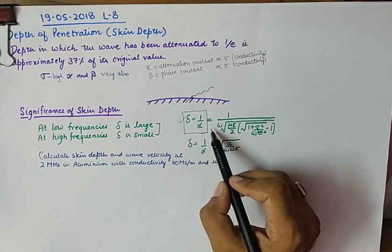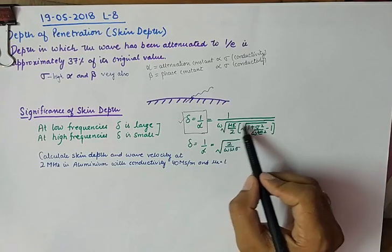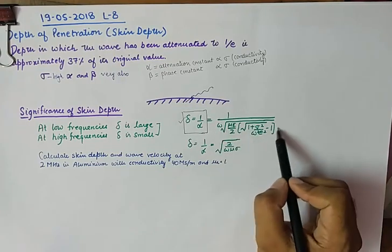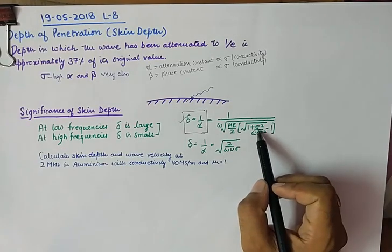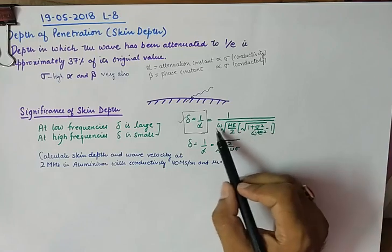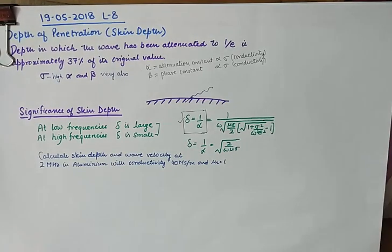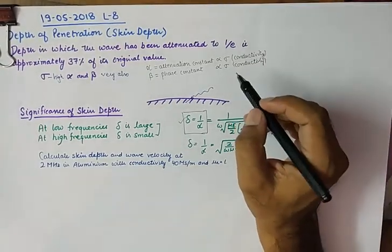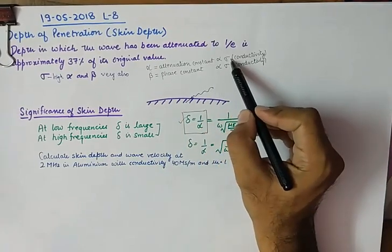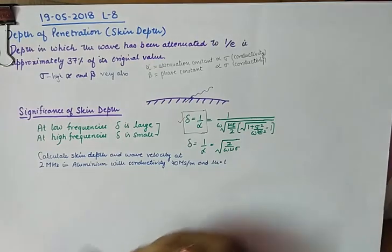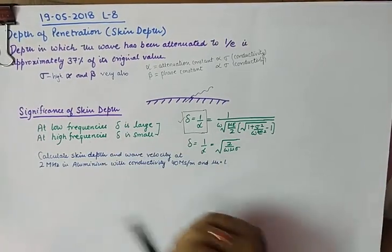And alpha itself is equivalent to this thing in the denominator. And you can see the proportionality of alpha is directly proportional to both sigma and omega. So that is why we say when attenuation is more due to conductivity, the skin depth reduces, and at high frequencies also, the skin depth reduces.